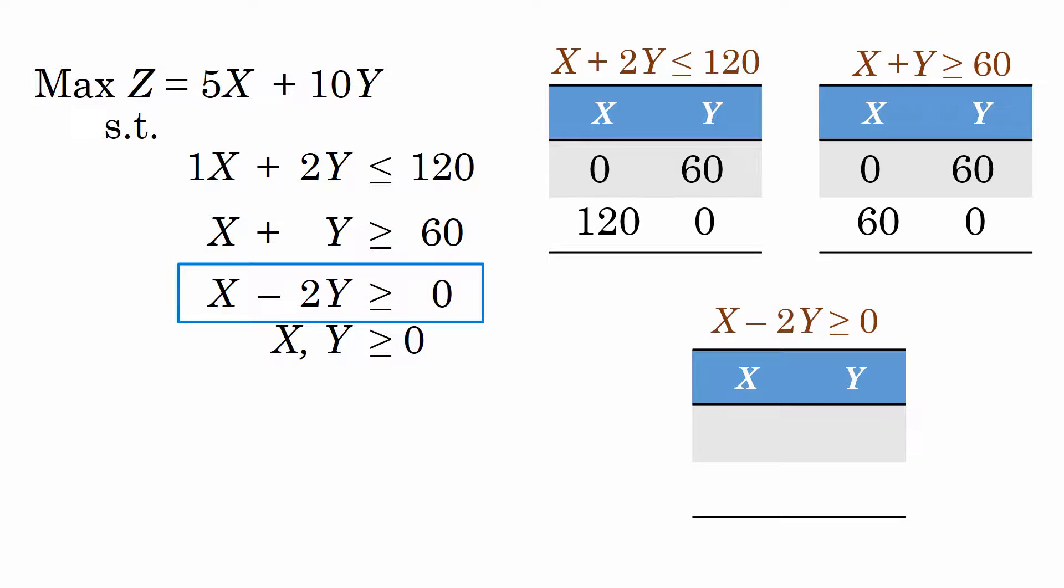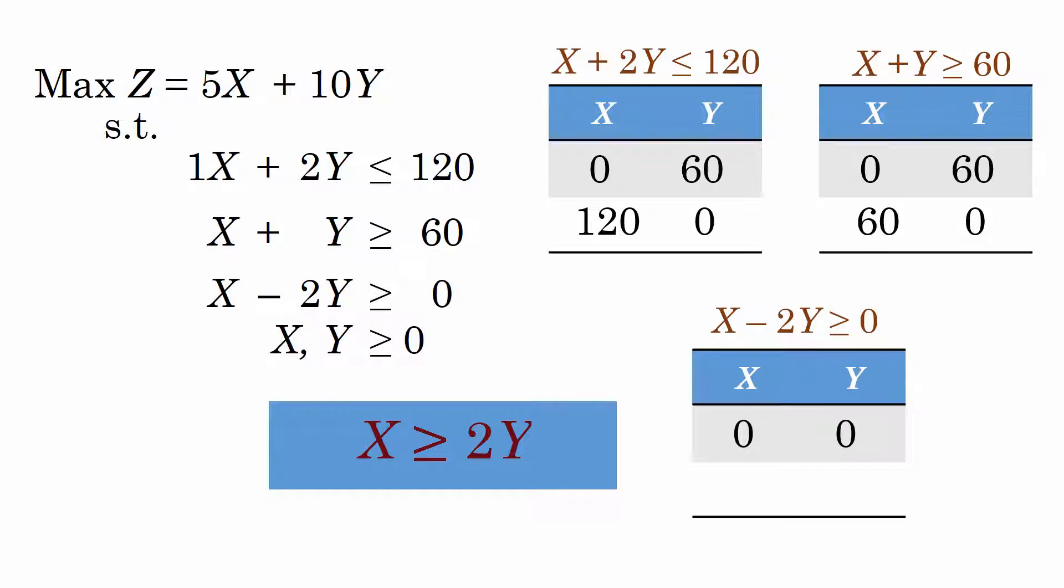For the third, when x is 0, y is also 0. So to find another point, we can rewrite the inequality as x greater or equal to 2y. We can then pick a reasonable value for either x or y and calculate the other. For instance, if y is 50, x is 2 times 50, which gives 100.